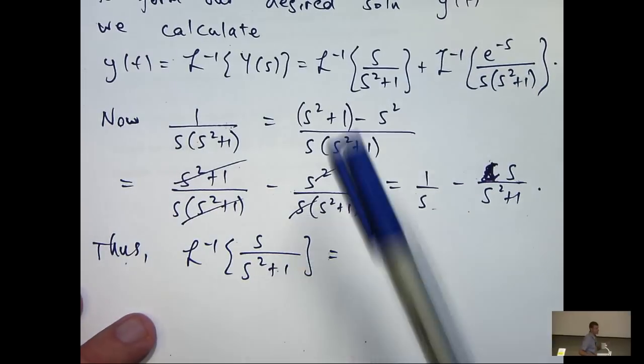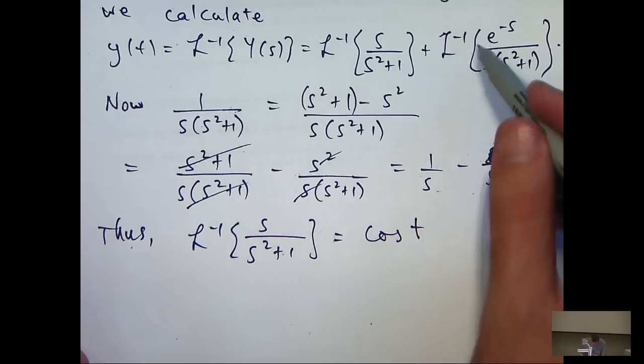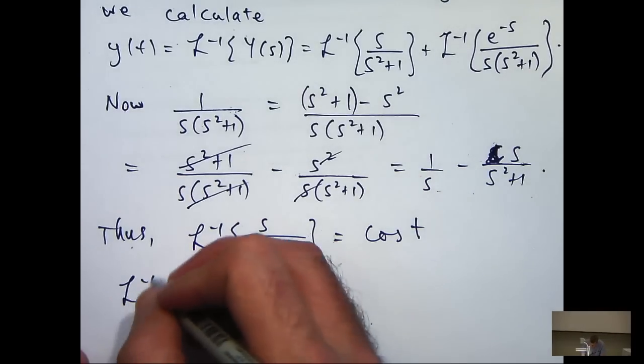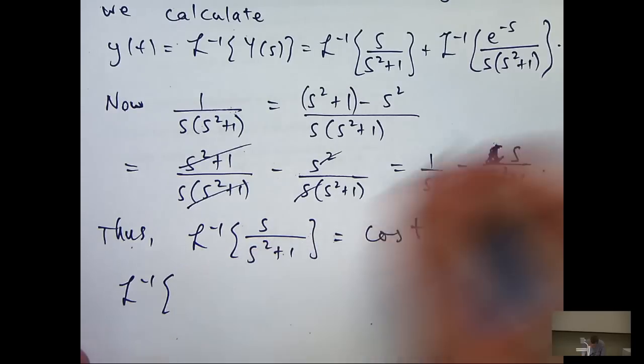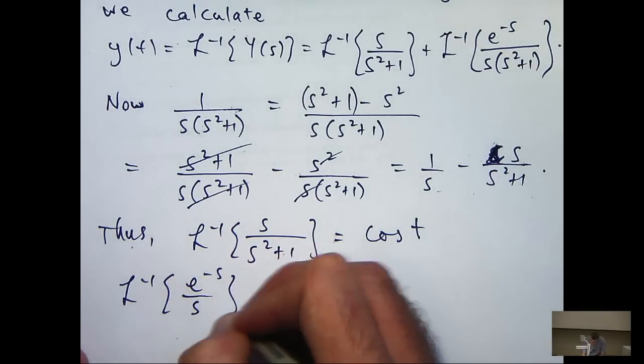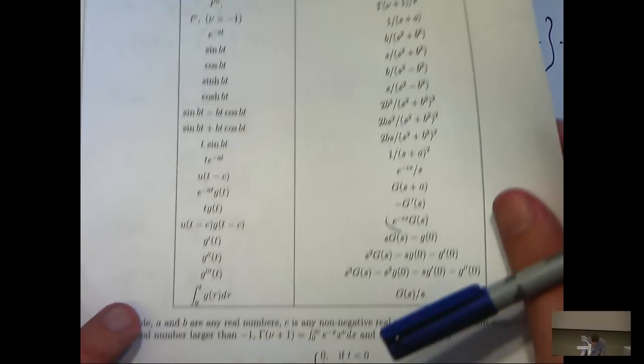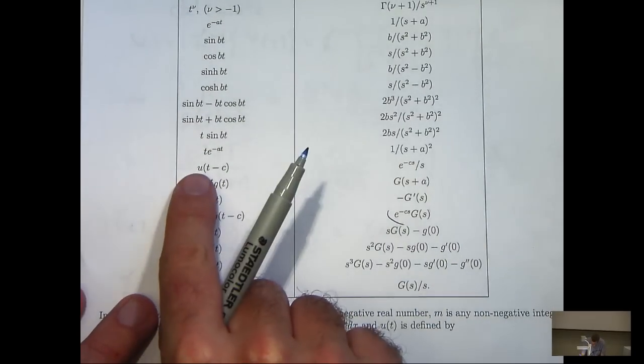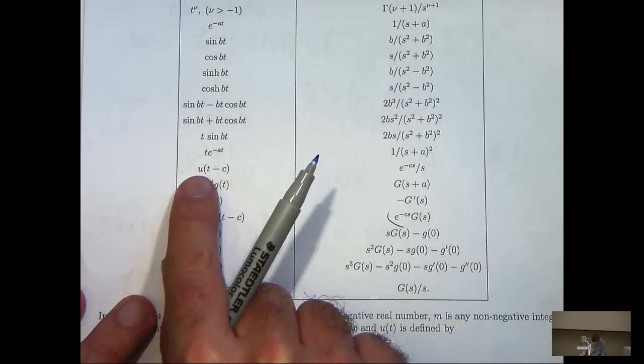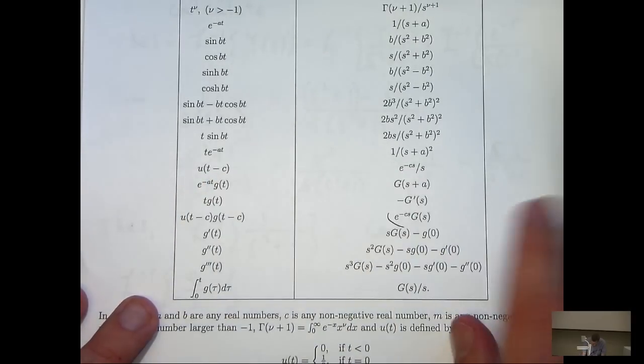So, the inverse transform here is just cos of t and the first term from this part up here will be the following. So, if we go to our table of transforms, you can see that the Laplace transform of the heaviside step function is just this and in our case c equals 1.